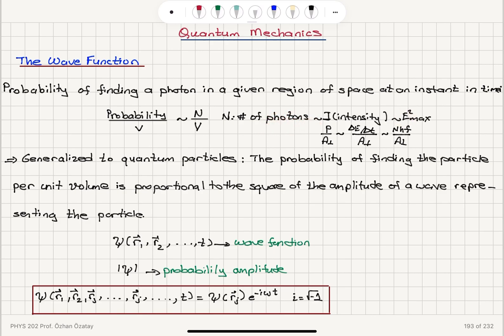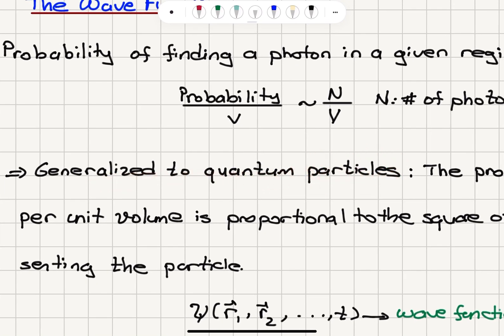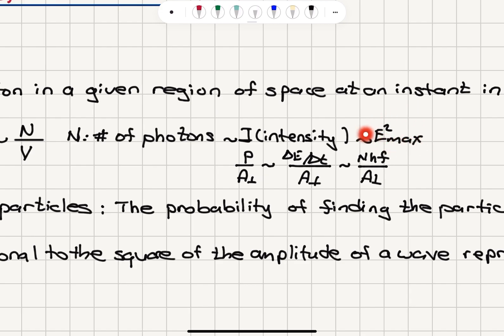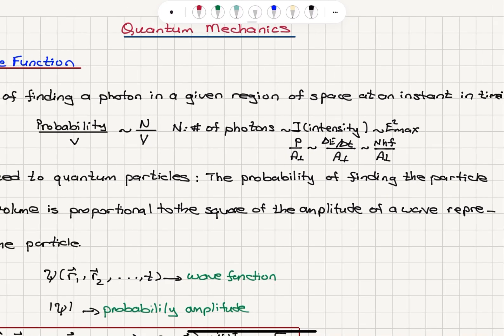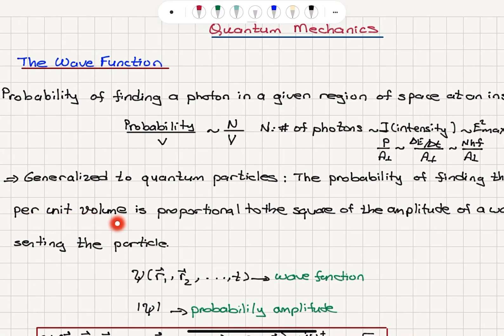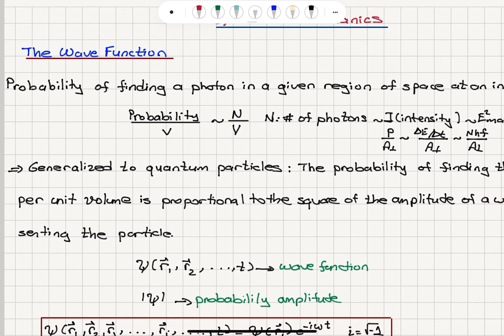If all particles have a wave associated with them, similar to photons, where the probability of finding the photon per volume is proportional to the number density, which is proportional to E_max squared — the wave that represents the photon amplitude squared — then the probability of finding the quantum particle per unit volume is proportional to the square of the amplitude of a wave representing the particle.